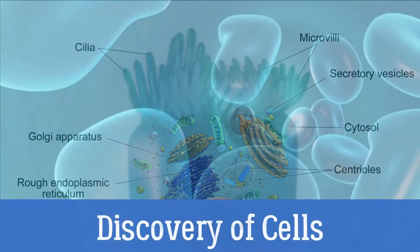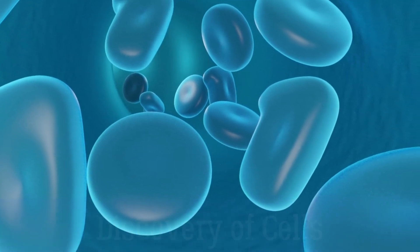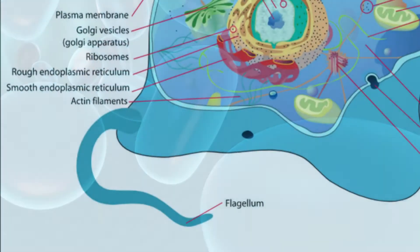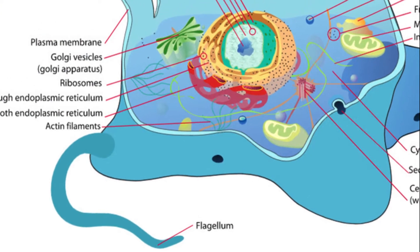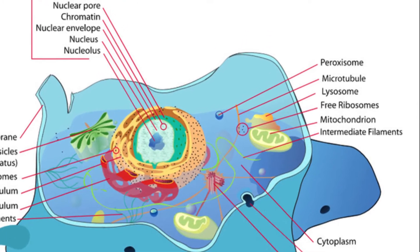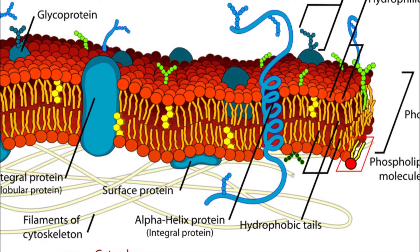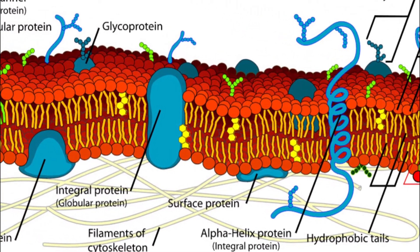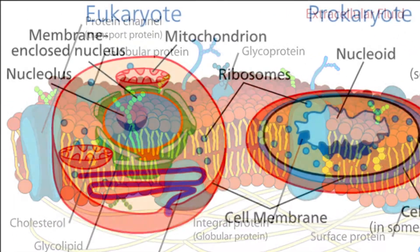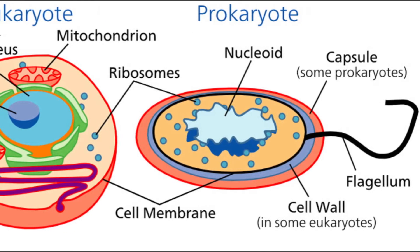The first time the word cell was used to refer to those tiny units of life was in 1665 by a British scientist named Robert Hooke. Hooke was one of the earliest scientists to study living things under a microscope. The microscopes of his day were not very strong, but Hooke was still able to make an important discovery. When he looked at a thin slice of cork under his microscope, he was surprised to see what looked like a honeycomb. Hooke made a drawing to show what he saw, and the cork was made up of many tiny units which Hooke called cells.